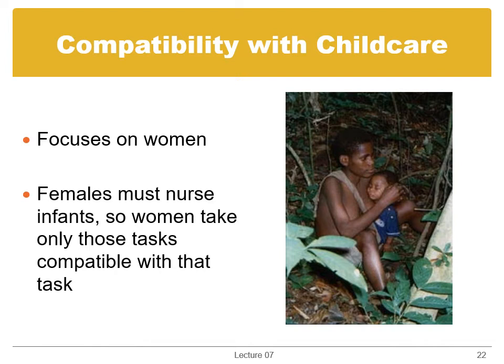According to the compatibility with child care theory, females must give birth to and nurse infants, so women perform only those duties compatible with those biological roles — tasks that can generally be done close to home, that do not place children in undue danger, and that can easily be interrupted when children demand attention. Men perform the tasks that aren't compatible with children — for example, hunting, which is dangerous, can't be interrupted by a crying child, and requires men to range far from home. This theory doesn't explain every cross-cultural gender role, but it explains much more than the strength theory.